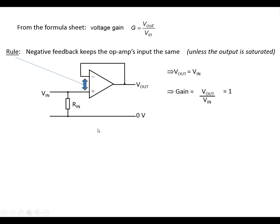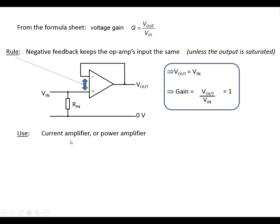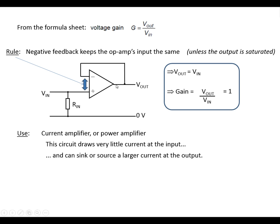Now you might wonder what the use of this is. Well, it's going to be a current amplifier or a power amplifier. The circuit's going to draw very little current at the input — so it might only be a few micro-amps going in. But if we use a power op-amp, then we can get maybe a couple of amps of current being sunk or sourced from the output. Power is volts times current. It doesn't amplify the voltage at all, but it does amplify the current, so therefore, being a current amplifier, it'll amplify the power.